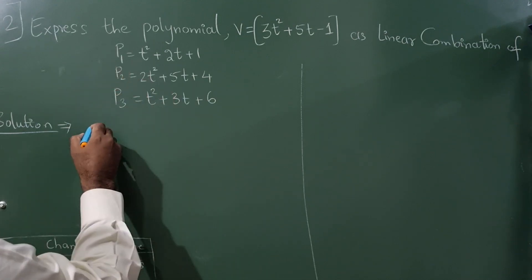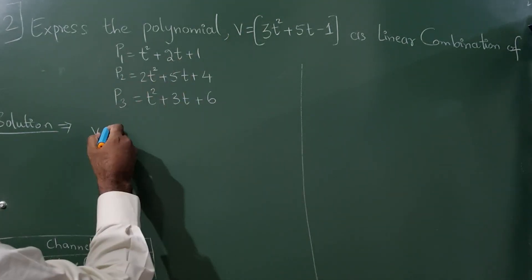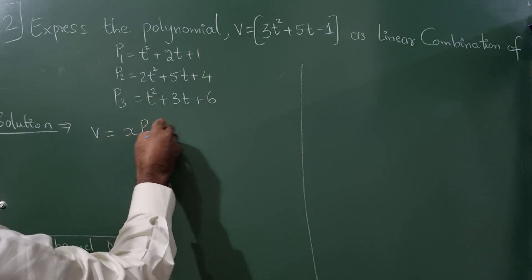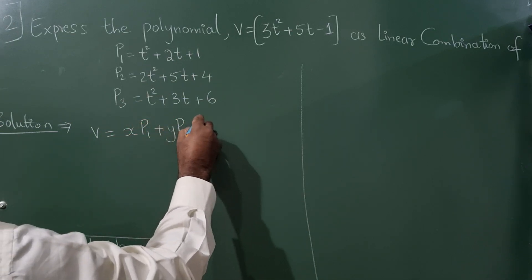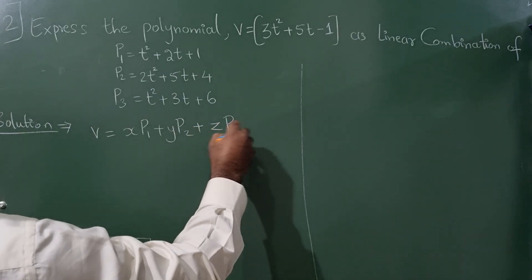So here I can write vector v = x·p1 + y·p2 + z·p3.